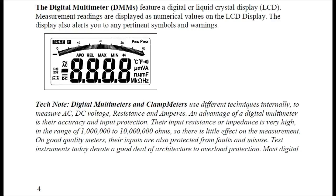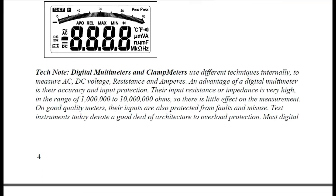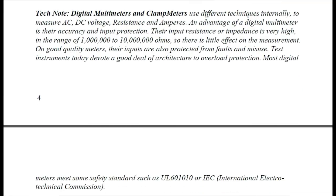Tech note: digital multimeters and clamp meters use different techniques internally to measure AC voltage, DC voltage, resistance, and amperes. An advantage of a digital multimeter is their accuracy and input protection. Their input resistance or impedance is very high, in the range of 1 million to 10 million ohms, so there is little effect on the measurement. On good quality meters, their inputs are also protected from faults and misuse. Test instruments today devote a good deal of architecture to overload protection. Most digital multimeters meet some safety standard, such as UL 601010 or IEC — International Electro-Technical Commission.